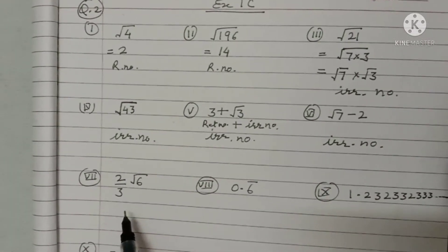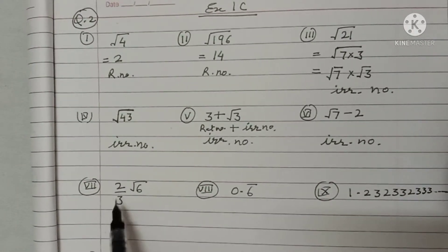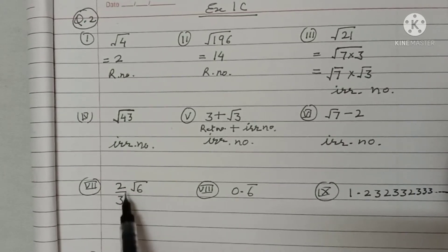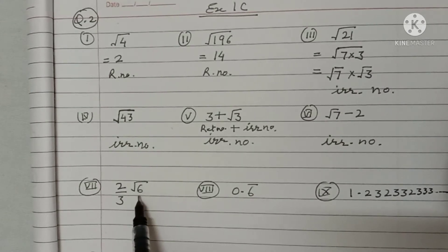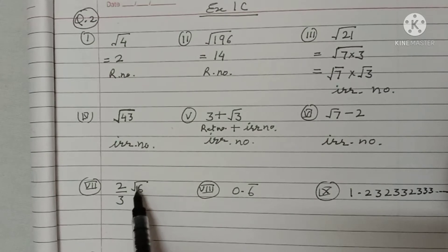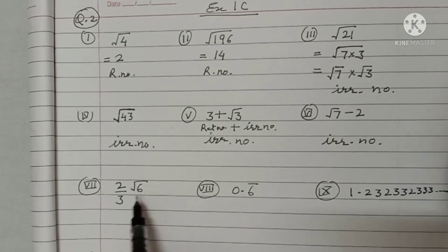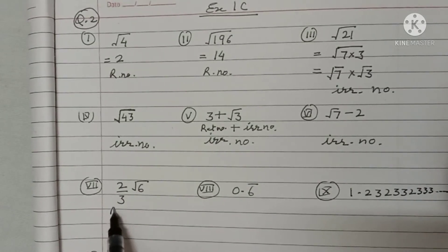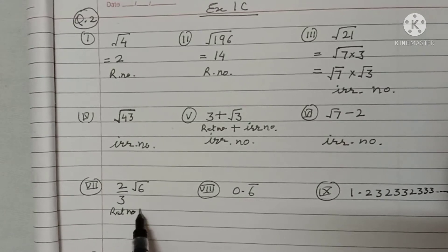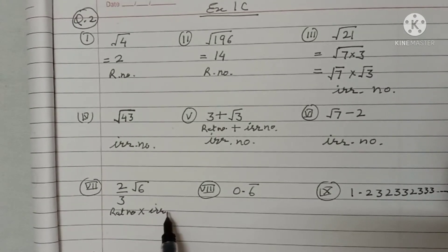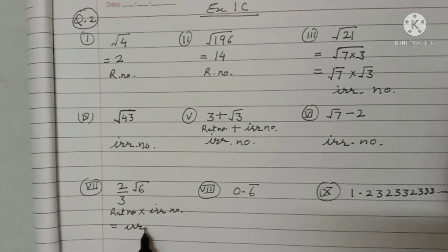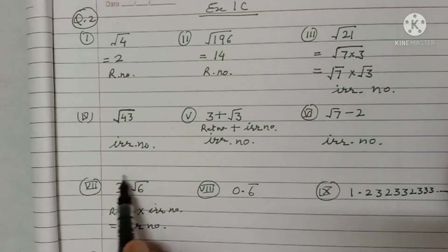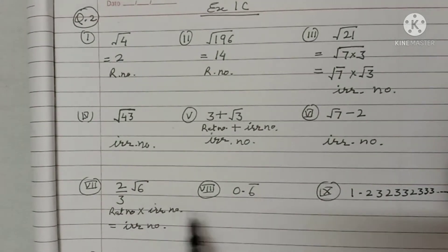Part seven: (2/3) × √6. Here 2/3 is a rational number and √6 is irrational because 6 is not a perfect square. The product of a rational number and an irrational number always gives an irrational number. So this is an irrational number.